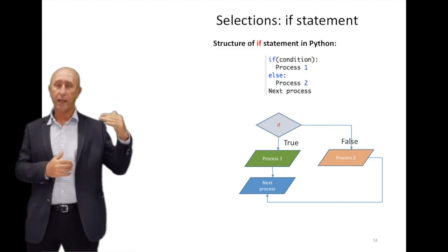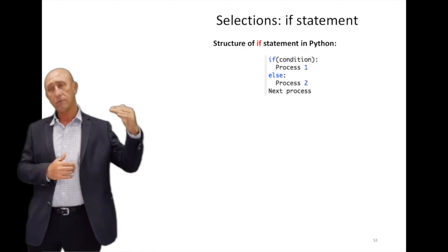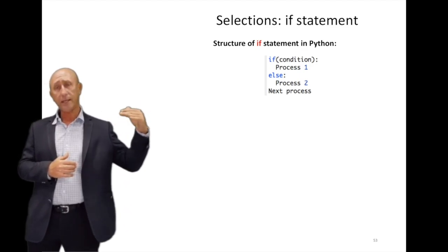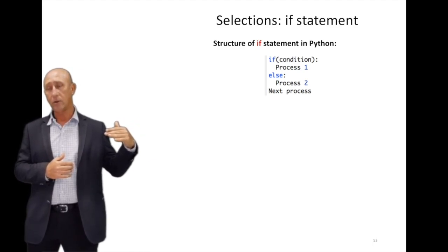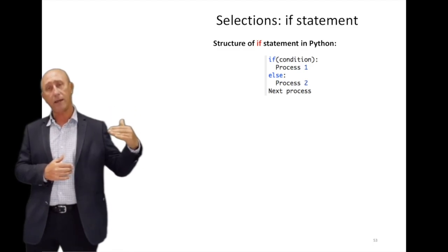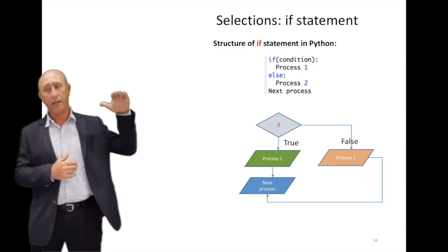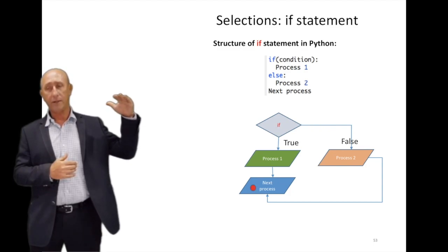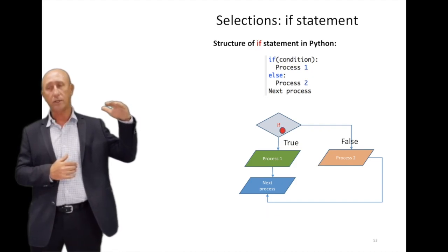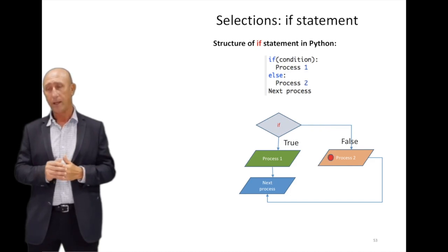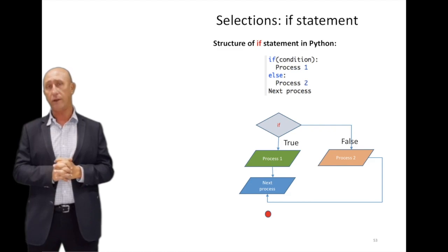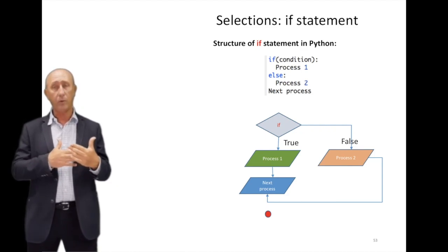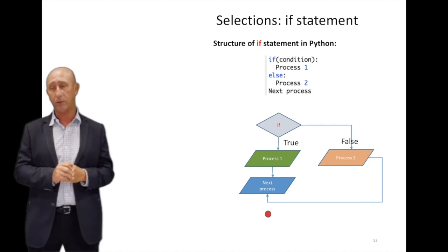You also have 'else'. For example: if it is raining, carry an umbrella; if it's not raining, don't carry an umbrella — that's the else. Another example: if the weather is cloudy, take an umbrella; else, do not take an umbrella. So the structure is: if condition is true, do something; if not true, go to the else statement and do something different.